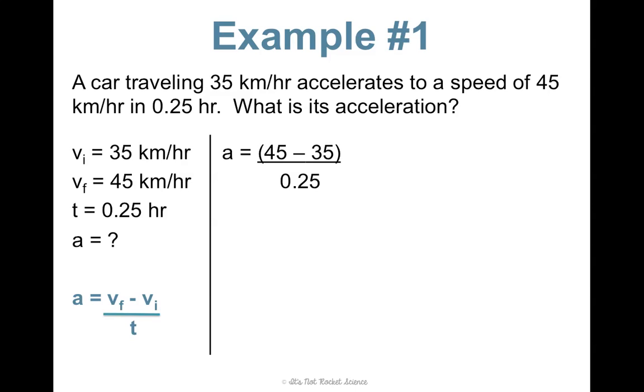Now, order of operations, do your parentheses first. 45 minus 35 is 10. Then do your 10 divided by 0.25, and you get 40. And again, your unit is basically your velocity unit, but you just put a little square on the time part, so 40 kilometers per hour squared.